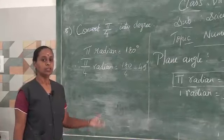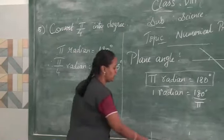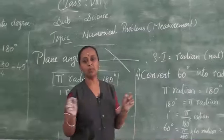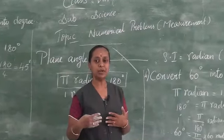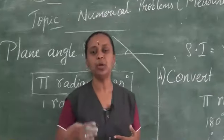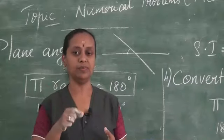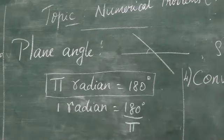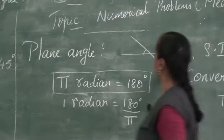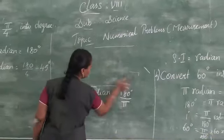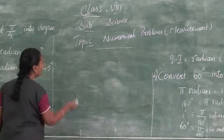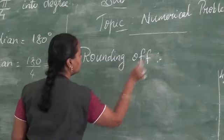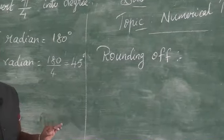Now we are going to learn how to approximate numbers. When we divide numbers using a calculator, many digits appear and it is difficult to use all of them. So we approximate numbers by a method called rounding off. Approximation is very important to make a clear measurement. We follow some rules to round off numbers.